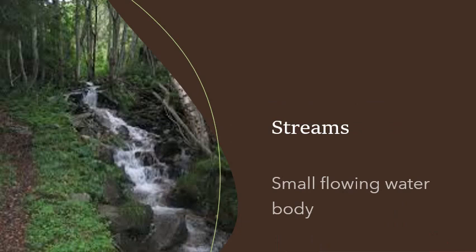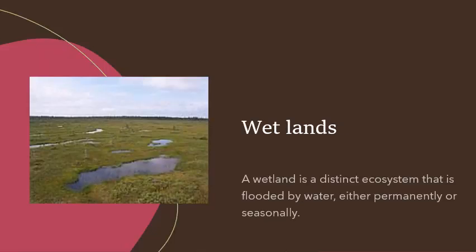Streams means small flowing water bodies. These streams begin in the mountain regions and flow into the river. When these small streams join together, they become a big river. When this river flows down, it goes to the ocean. These streams are the beginning of the rivers. S-T-R-E-A-M-S — streams. What are streams? Small flowing water bodies.